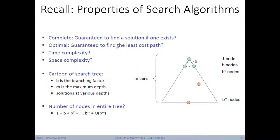Recall from our last lecture we learned some basic properties of search algorithms. Different search algorithms can be complete or optimal, and have different time and space complexities. Search trees have different breadths and depths, which we can use to calculate how many nodes are in the entire tree. We always start our search at the top of the tree and work our way down using some strategy. The red circles in our illustrations correspond to possible solutions we want to find.